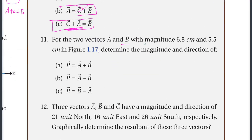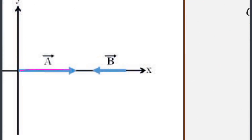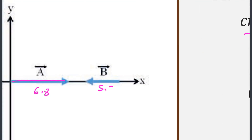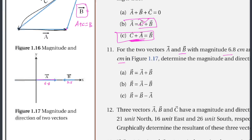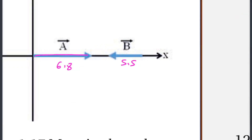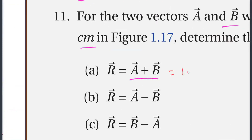Given two vectors A and B with magnitudes 6.8 cm and 5.5 cm as shown in figure 1.17, determine the magnitude and direction of A plus B. Vector A is 6.8 cm and vector B is 5.5 cm. The resultant A plus B is approximately 1.3 cm.